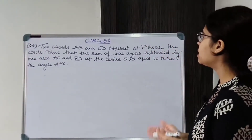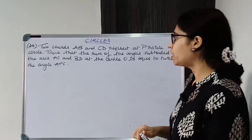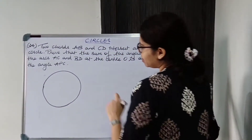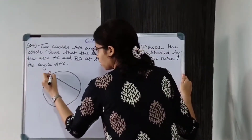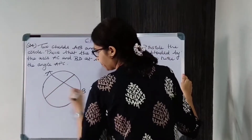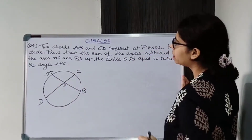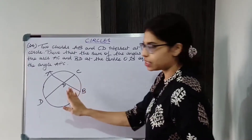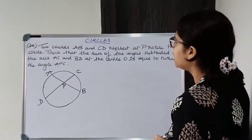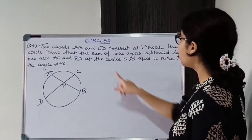There are two chords AB and CD intersecting at point P inside the circle. Let us draw the circle first. AB and CD are two chords intersecting at P inside the circle. We have to prove that the sum of the angles subtended by arcs AC and BD at center O.